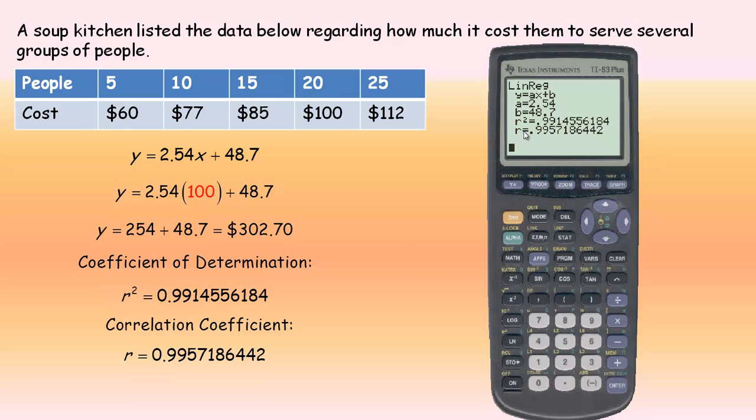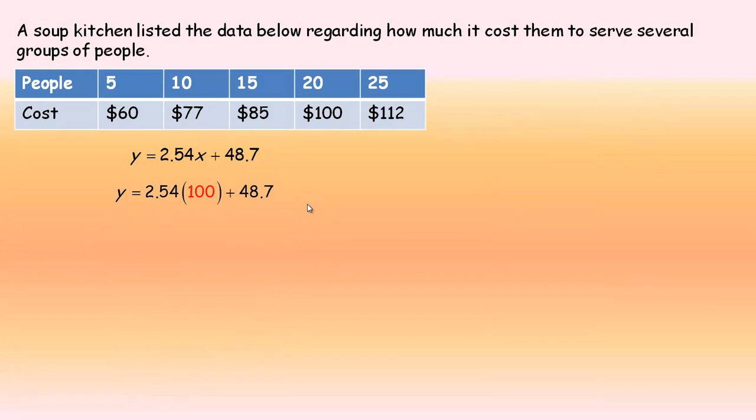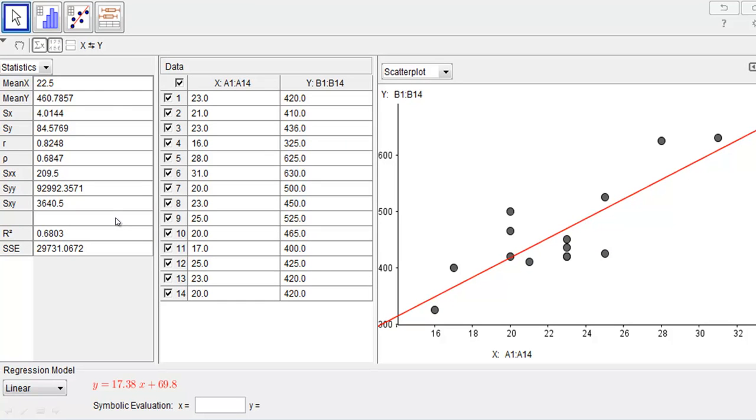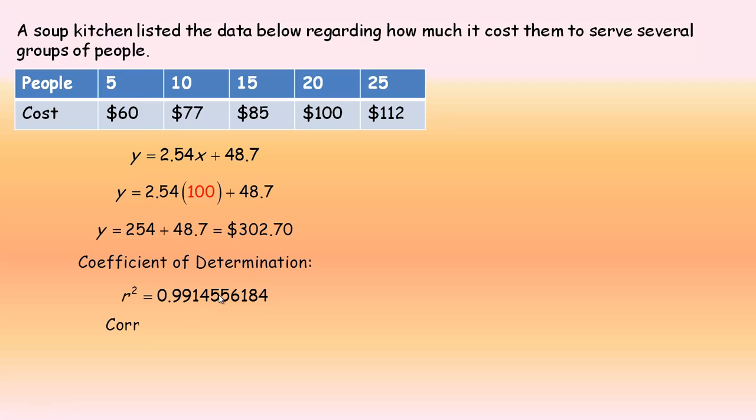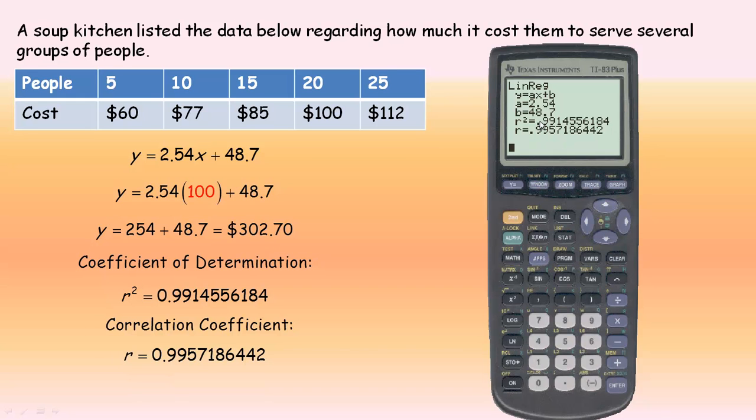The calculator actually gives you the coefficient of determination and the correlation coefficient. That's where these two numbers come from. The GeoGebra application will do that too. If I go back to the GeoGebra page, there's the R squared value and there's the R value for the ice cream sale one.